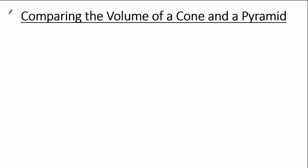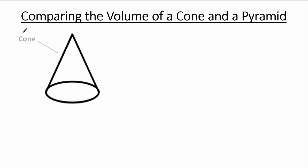Before taking a look at some examples, let's briefly compare the volume of a cone and a pyramid. Starting with a cone, the base of a cone is a circle. In order to find the volume of a cone, we need two measures: the radius of the circle and the vertical height of the cone. Note that the vertical height and the radius are perpendicular to each other.